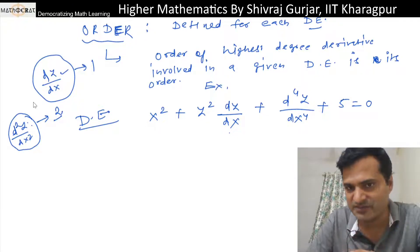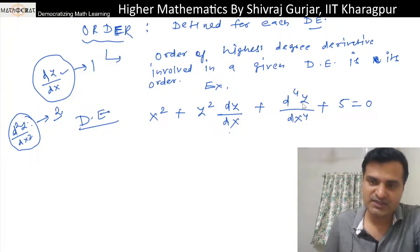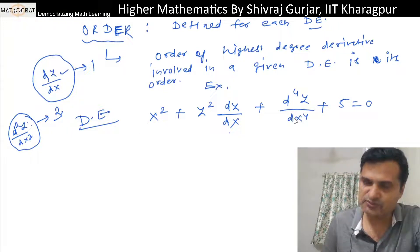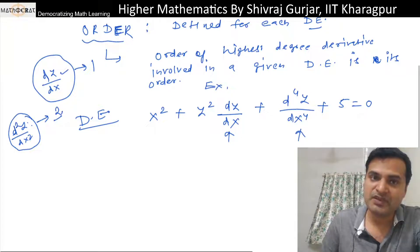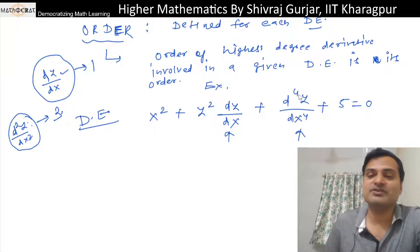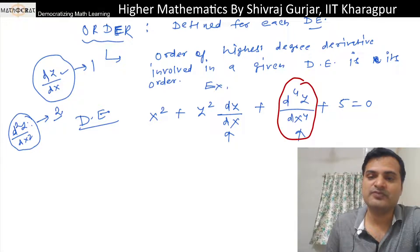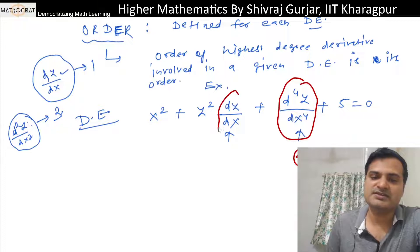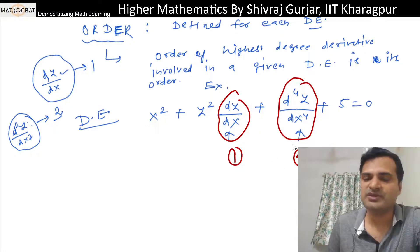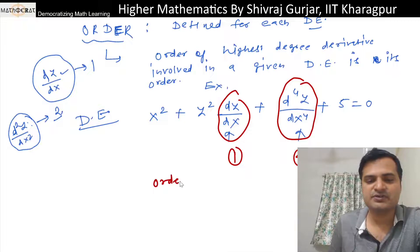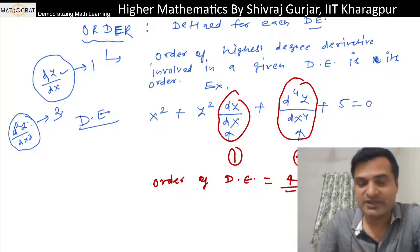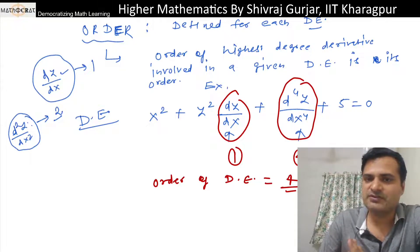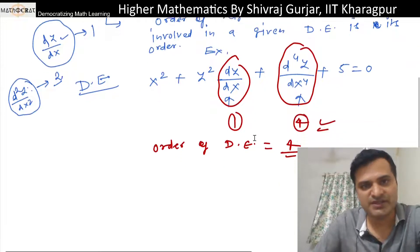When we look at the order of a differential equation, we consider all differential operators present and the one with the highest order determines the order of the differential equation. Here we have dy/dx of order 1 and d⁴y/dx⁴ of order 4, so the highest order is 4. Therefore, the order of this differential equation is 4.